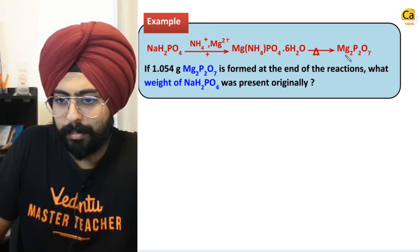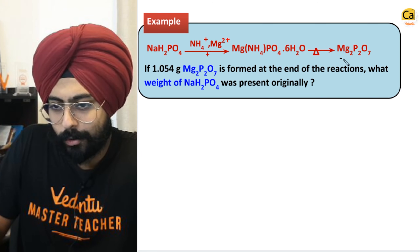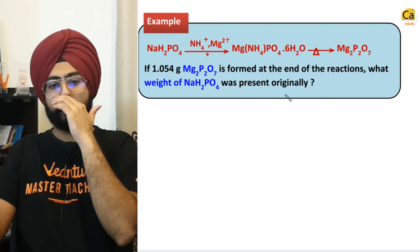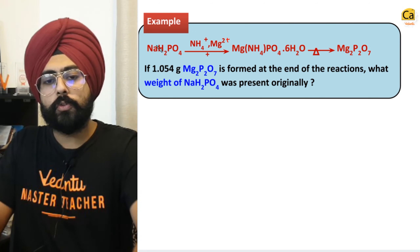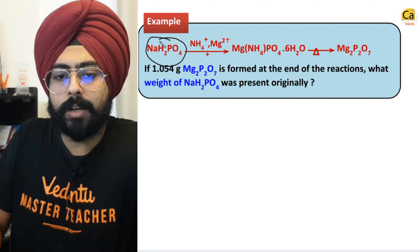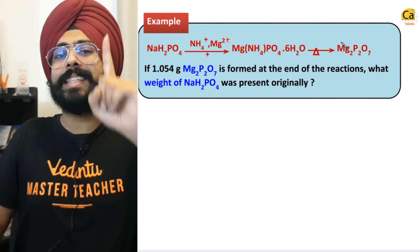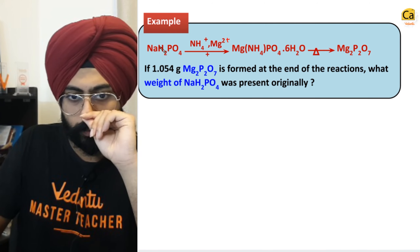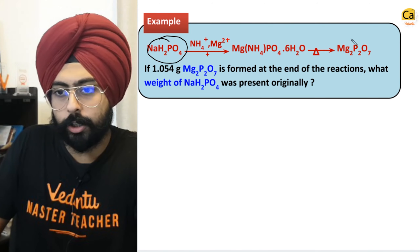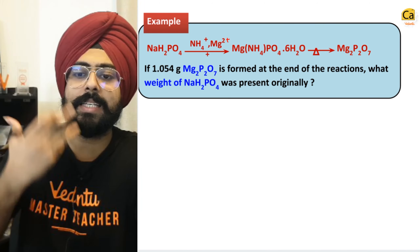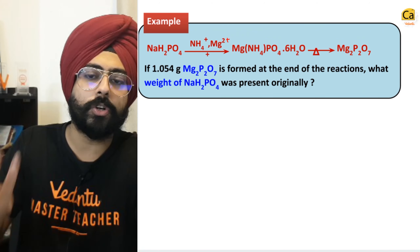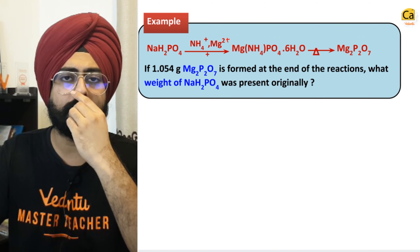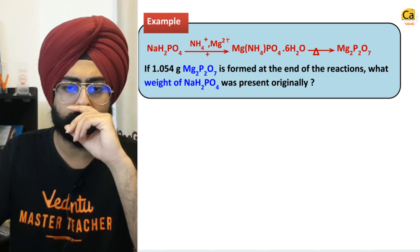Then you heat it up and you also get Mg2P2O7. From the starting point to the end point, what is the atom that I can conserve? Balancing this reaction is practically impossible — too much is given here.